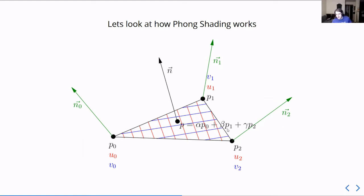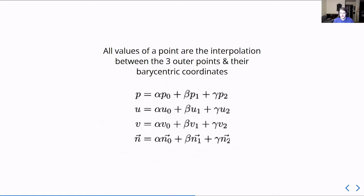P equals alpha P0 plus beta P1 times... I can't remember Greek. Is that gamma? Okay. It's not Charlie. It's the phonetic alphabet. Wrong alphabet. So, all three points are just... Each point is interpolated across the three other points.